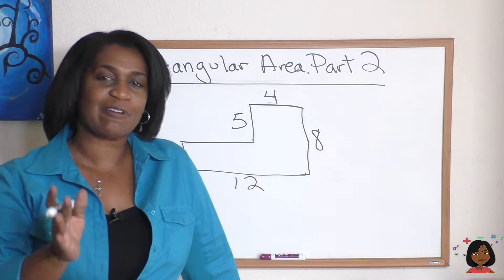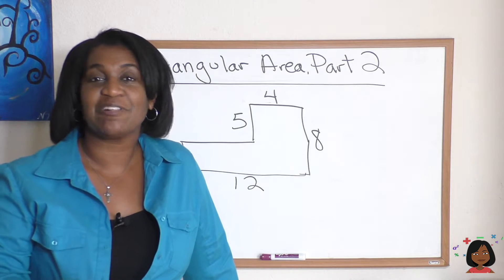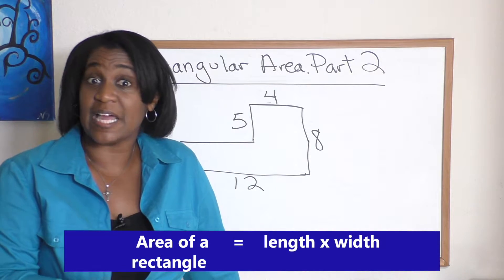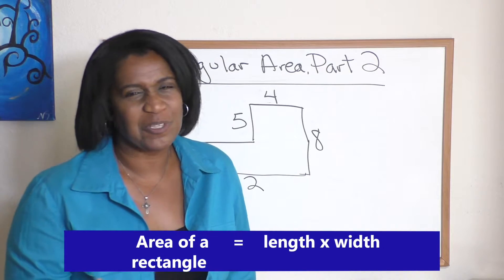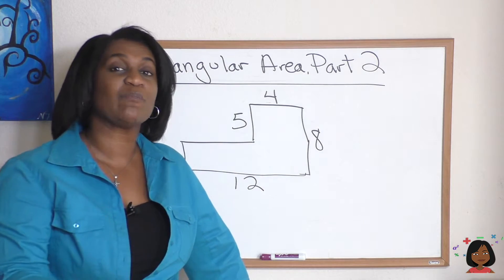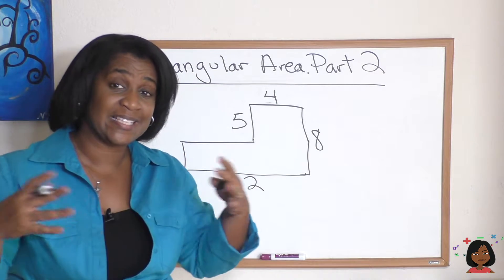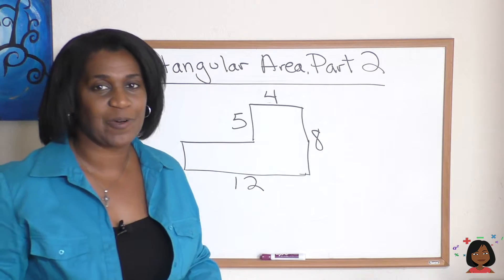What does part two mean? Well if you remember when we talked about rectangular area earlier, generally the area of a rectangle is its length times its width. But when you start getting these funny examples that look like this, you might have to do a little bit more detective work before we can do length times width and just come up with an easy answer.